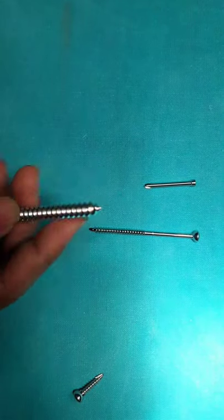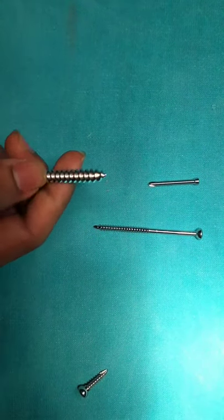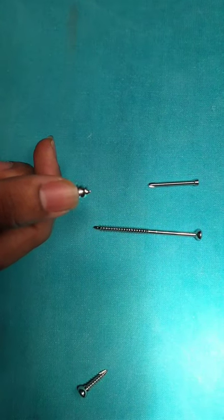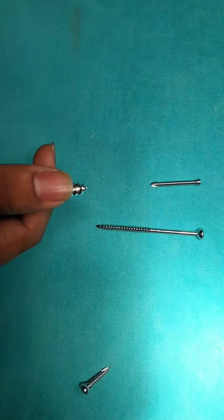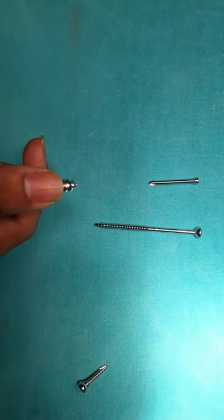This is the core screw tip used in cancellous bone. The tip of the screw is designed as a tapping spiral so that it compresses the trabecular spongiosa of the cancellous bone.